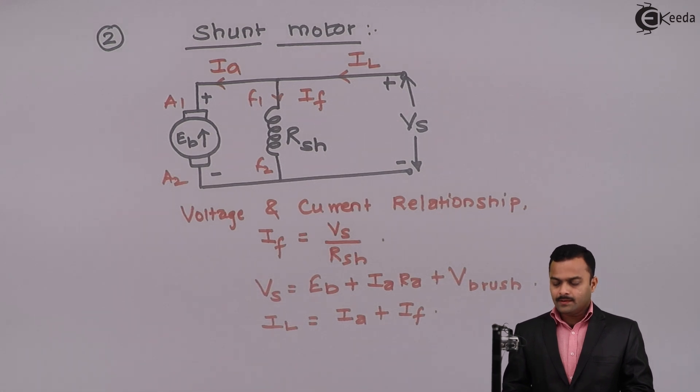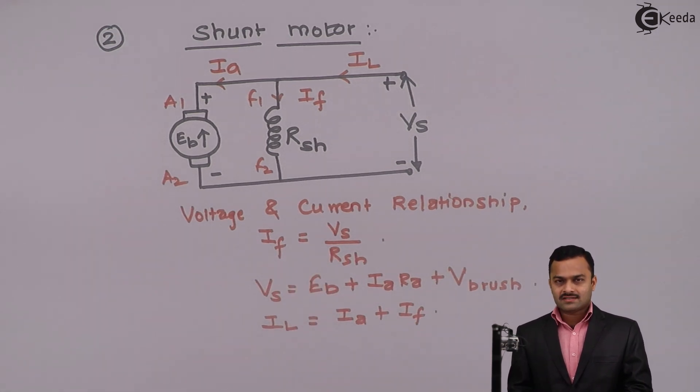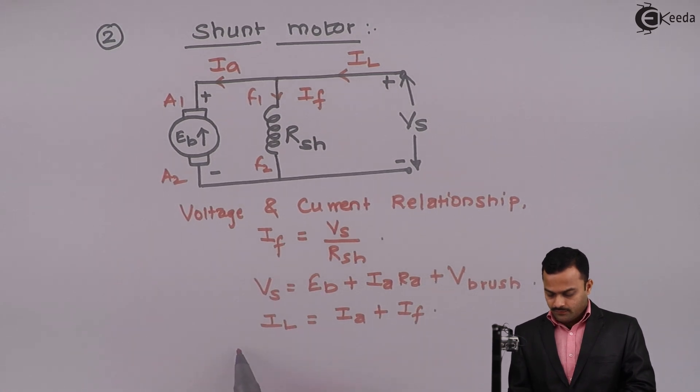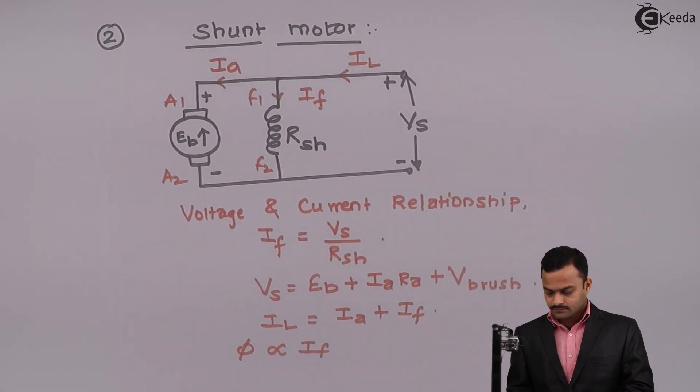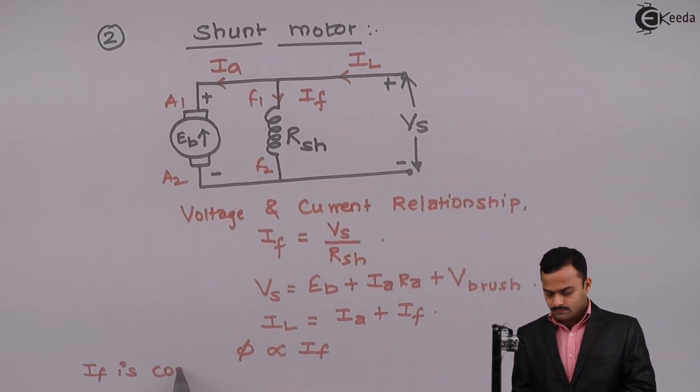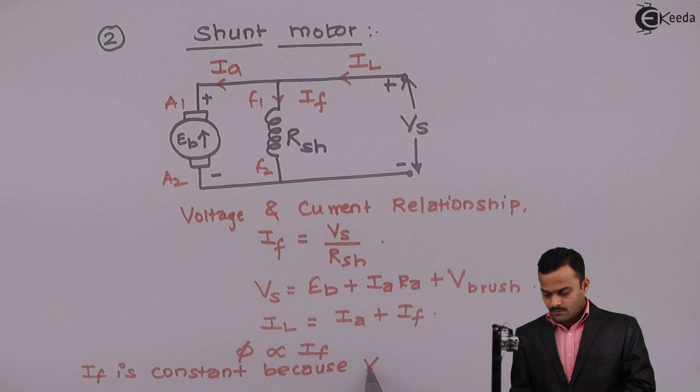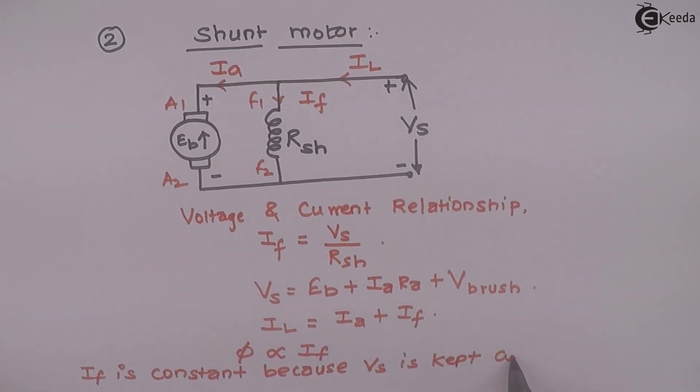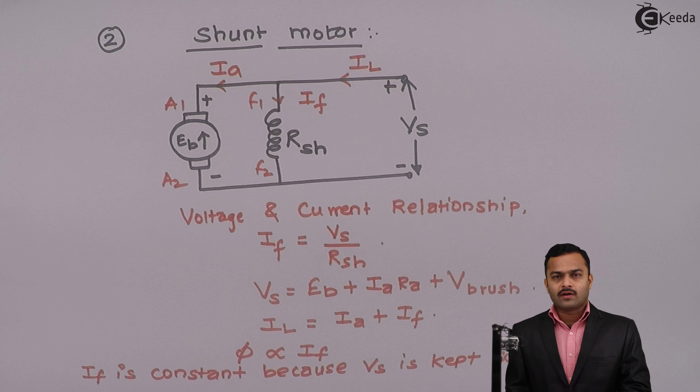One important thing: if I give Vs constant, which is the case most of the time, then I will get constant If, and the constant If will produce constant flux. So flux produced in this motor is directly proportional to If, and If is constant because Vs is kept constant. This motor is also called as constant flux motor.